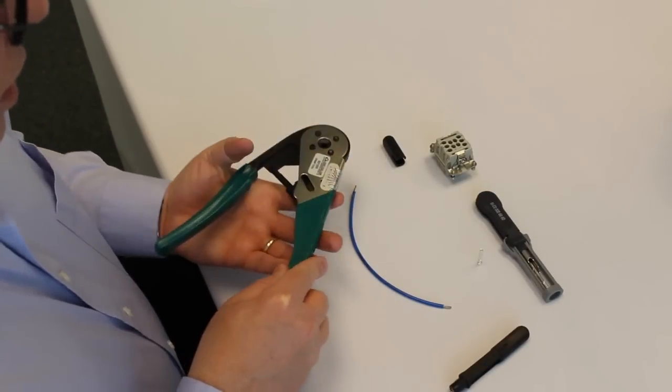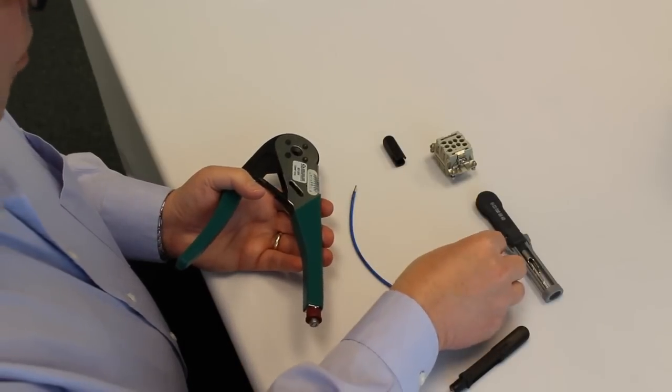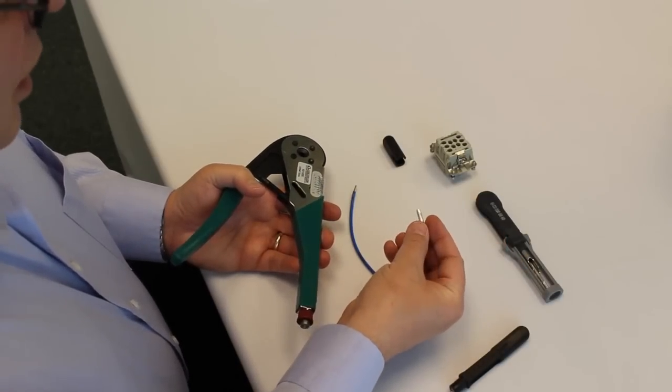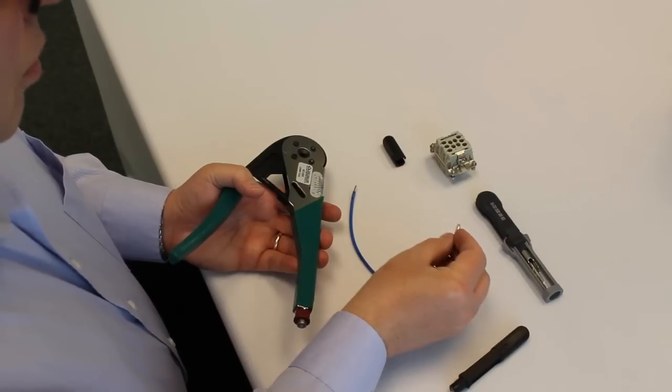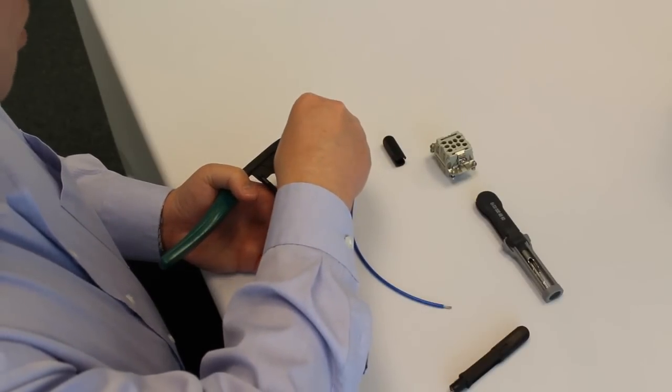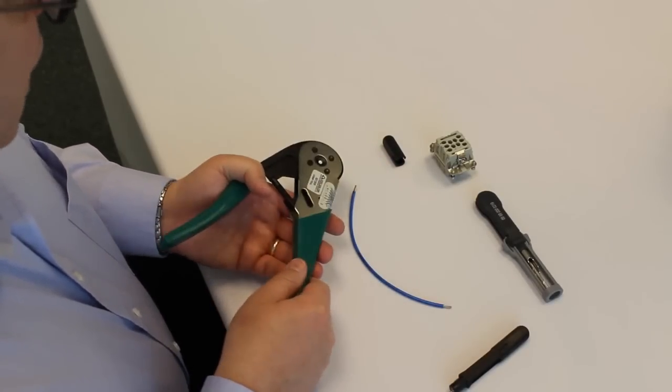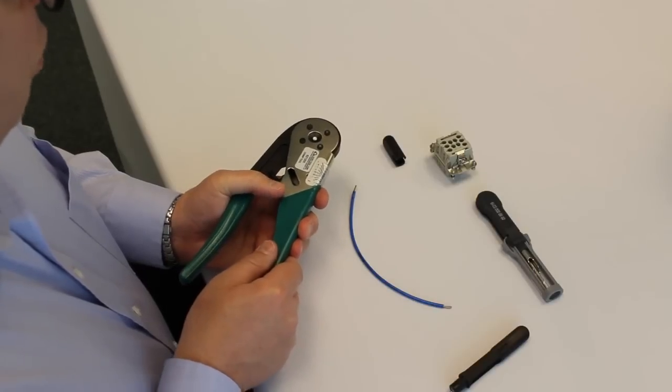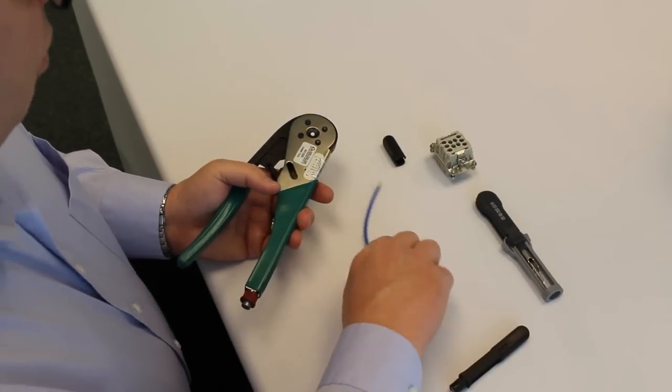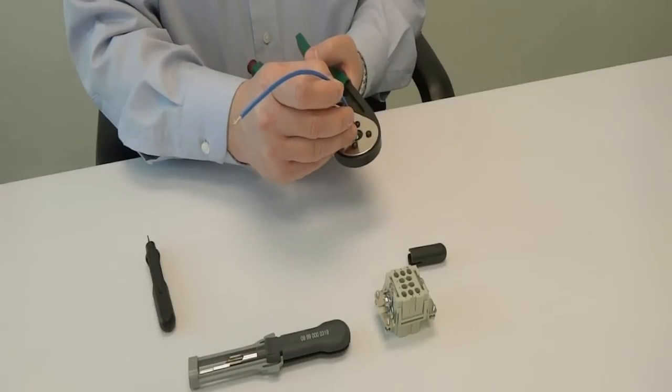In this case, as I said, it's a 16 gauge wire that we're crimping. The first step would be to take the contact, in this case it's a female crimp contact, and place it in the tool. And sometimes to stabilize things, it's helpful to close the tool slightly to make it easier to insert the wire and complete the crimping process.